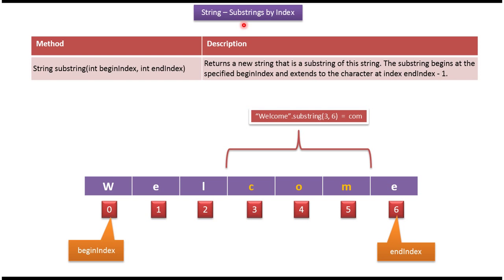In this video tutorial I will cover the substring method. Here you can see the string 'welcome'. The begin index is 0 and end index is 6. Here I am calling the substring method, passing begin index 3 and end index 6. Begin index is inclusive and end index is exclusive. So we will get 'com'.